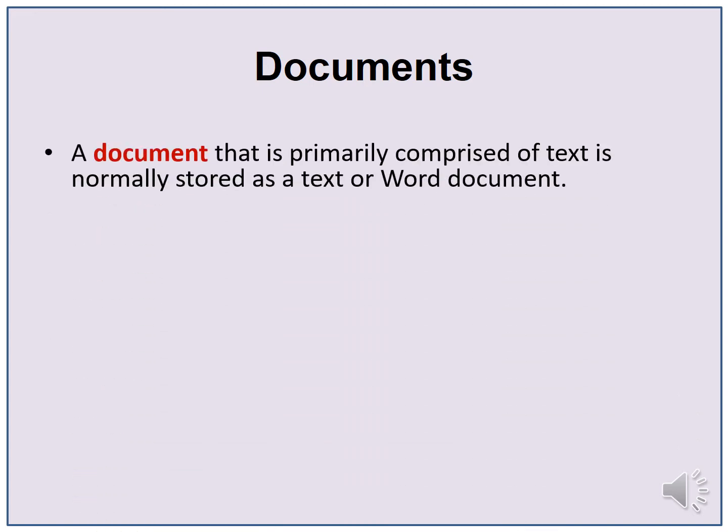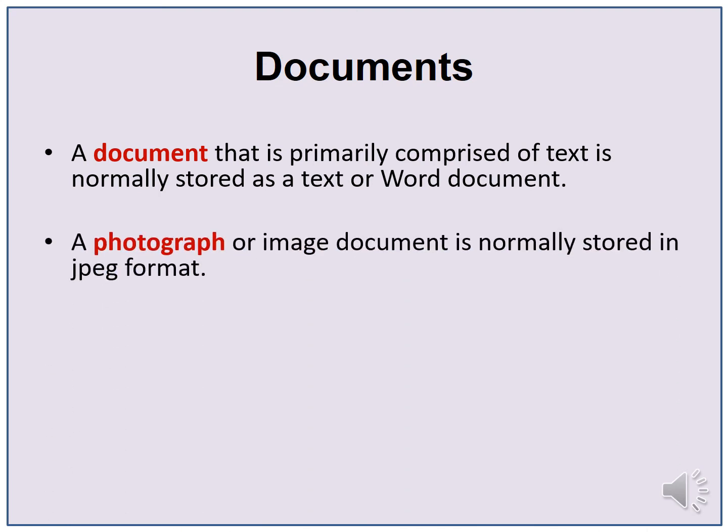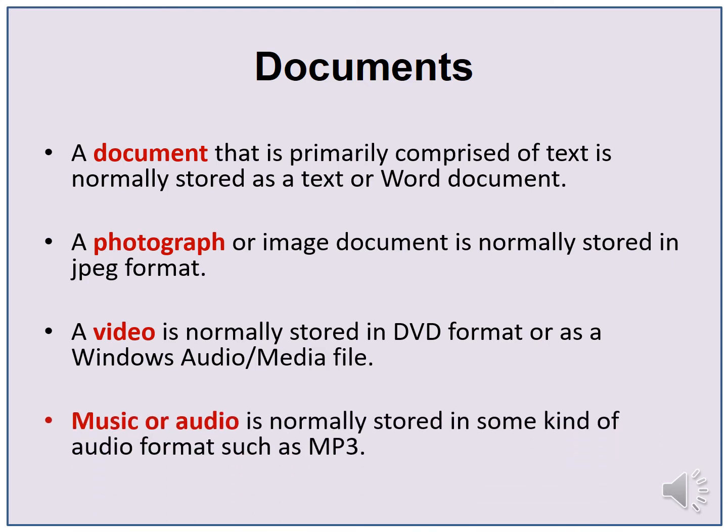In this regard, a document that is primarily comprised of text is normally stored as a text or word document. A photograph or image document is normally stored in JPEG format. A video is normally stored in DVD format or as a Windows audio media file. Music or audio is normally stored in some kind of audio format such as MP3.